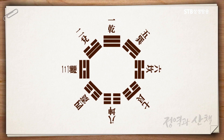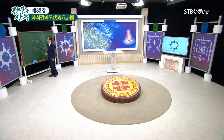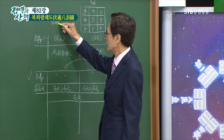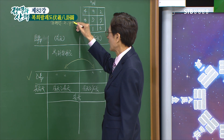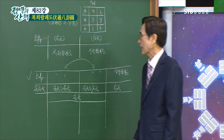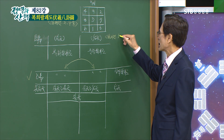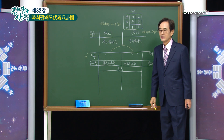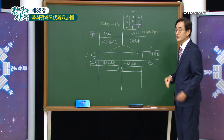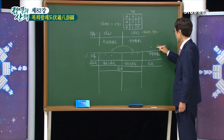이것이 복희팔괘도입니다. 복희팔괘도가 만들어지게 된 근거는 주역 설계편에 나와 있습니다. 복희팔괘도는 주역 설계편 3장과 4장에 언급되어 있고, 문왕팔괘도는 설계편 5장에 언급되어 있습니다.